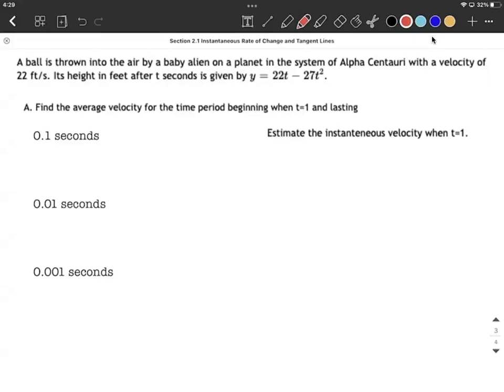Okay, on this example we are given a height function. We're told a ball's thrown into the air. We're given this height function denoted by y equals 22t minus 27t squared. As we're looking at this, y, our output values, are going to be heights.